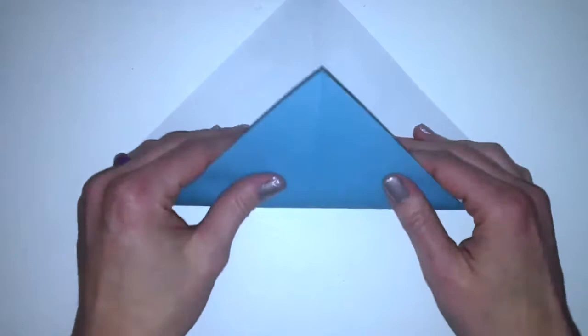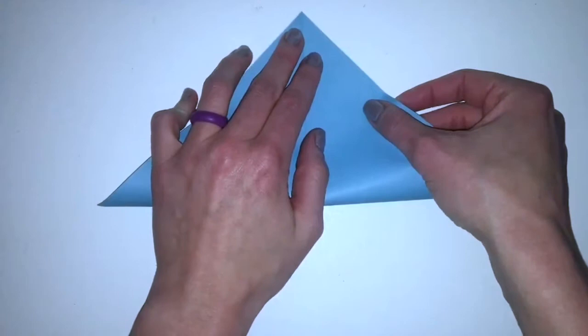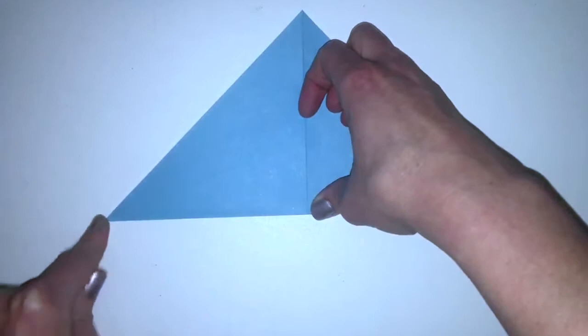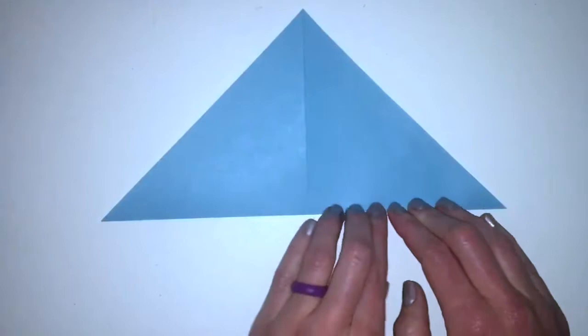So the reason that we do all these little folds when we start origami is these are quite literally our guidelines. By putting in these lines, it now makes the actual shaping of the paper easier when we do the last few steps of the project. All right, and there's another triangle. Put it back up, you can see we have an X going through our paper.